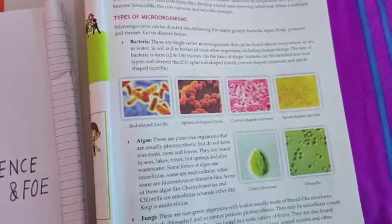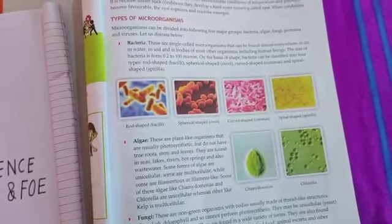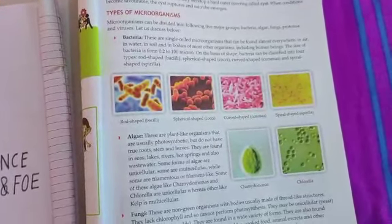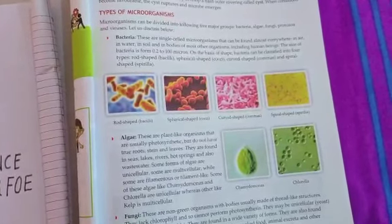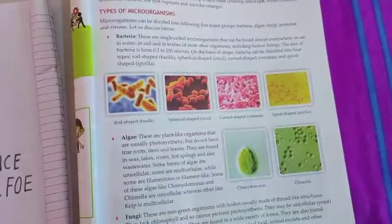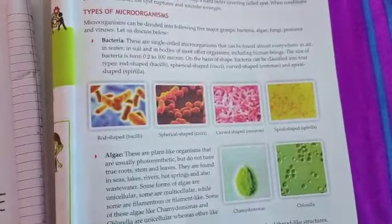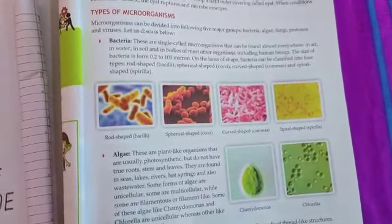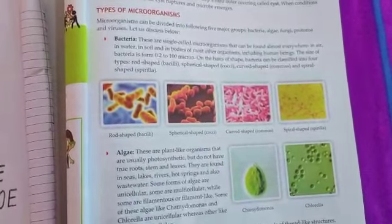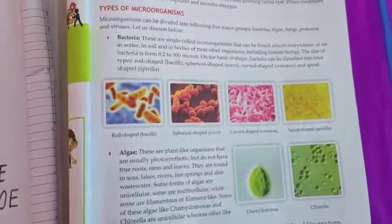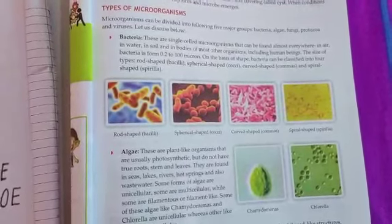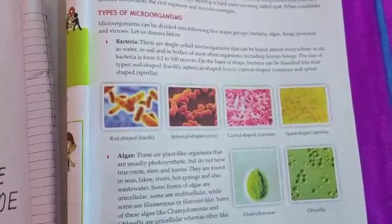Types of microorganism — सूक्ष्म जीवों के प्रकार. Microorganisms can be divided into the following five major groups: bacteria, algae, fungi, protozoa, and viruses. मुख्यतः सूक्ष्म जीवों को पांच भागों में विभाजित किया गया है: जीवाणु, शैवाल, कवक, प्रोटोजोआ और विषाणु।